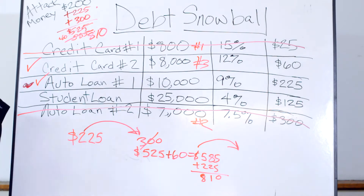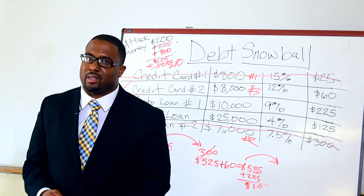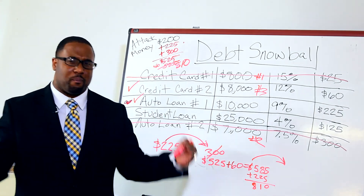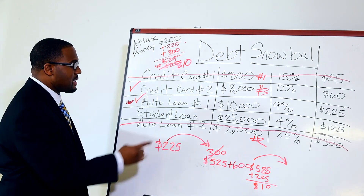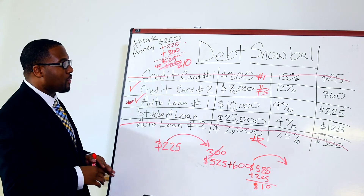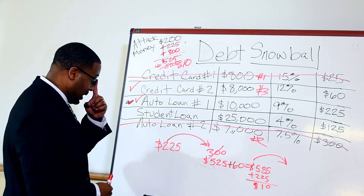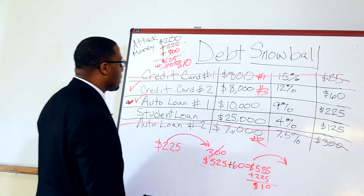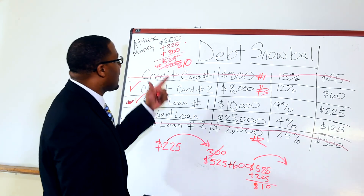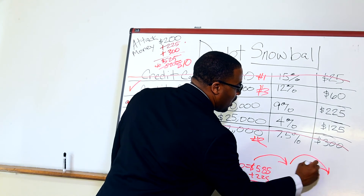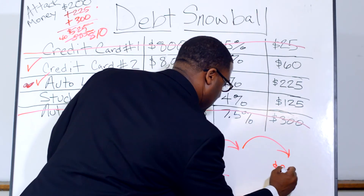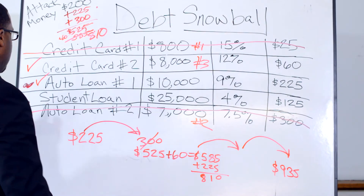Do you see how this thing starts to really snowball? It's a great method. His last debt after auto loan one is paid off is student loans. We know those student loans are a killer — generally the hardest one to get rid of. Even if a person files for bankruptcy, this is still one that stays. You have to pay it off; there is no way around it. You've got to give Sallie Mae her money back — she'll garnish your wages if you don't. John is paying $125 a month towards his student loans, and now he has $810 in attack money. That's $810 plus $125, totaling $935 that he's using to attack his student loans.